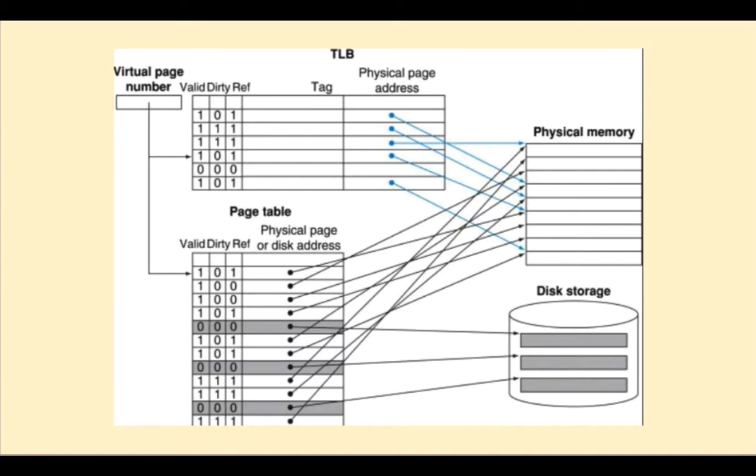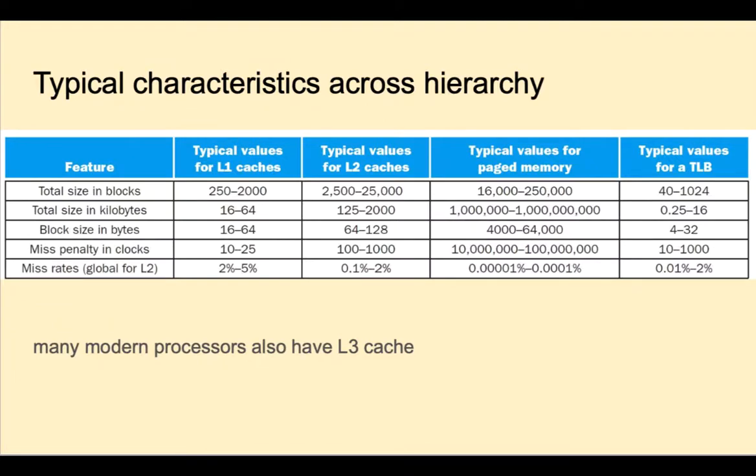Here we see different values across the memory hierarchy for size in blocks, kilobytes, and bytes, miss penalties in clocks, and miss rates. Let's look at block size in bytes. Typical L1 caches are from 16 to 64 bytes. L2 caches from 64 to 128 bytes. Pages are 4K to 64K in size. And the TLB is just 4 to 32 bytes. The miss penalty in clocks for L1 cache is 10 to 25 clocks. For L2 cache, it's 100 to 1000. For pages, it's 10 to 100 million. And for TLB, just 10 to 1000.